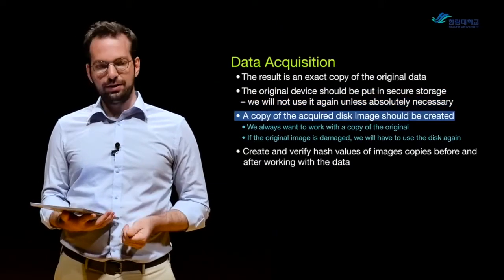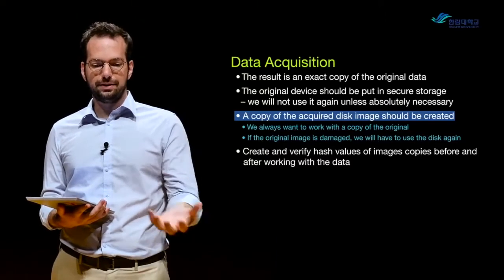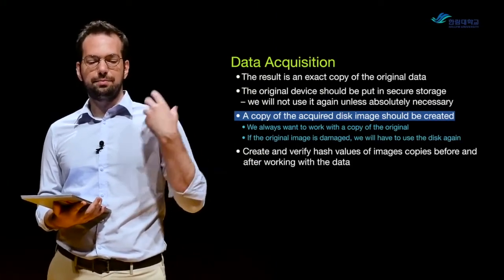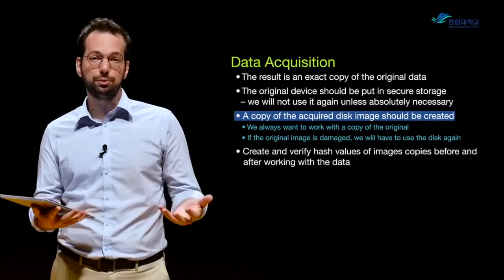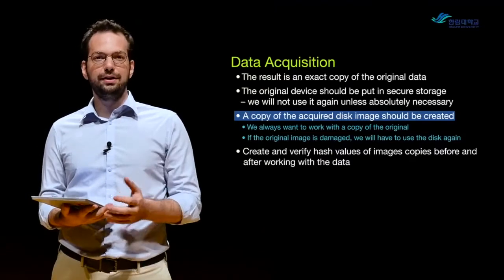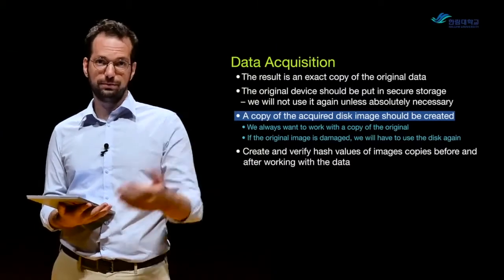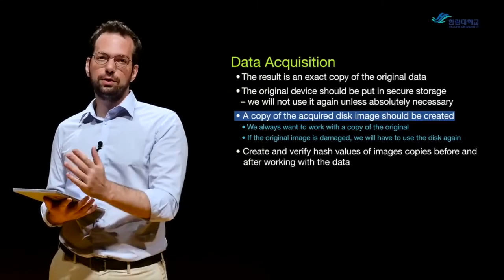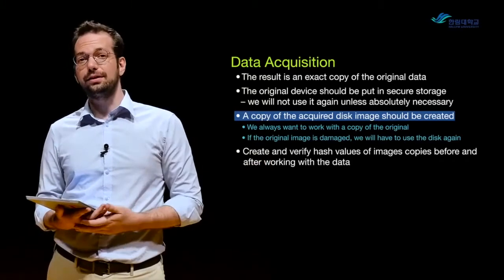We always want to make a second copy of the acquired disk image. The reason is that our tools might somehow modify the image we've created, and if that happens, we can no longer use it for court. So we keep the original forensic image stored securely, and whenever we want to do analysis, we make a copy of that file and always work with this second copy. If we modify data in the second copy, no problem — we can just make another copy without accessing the original disk.